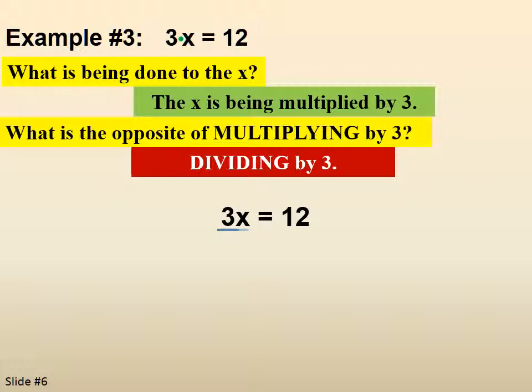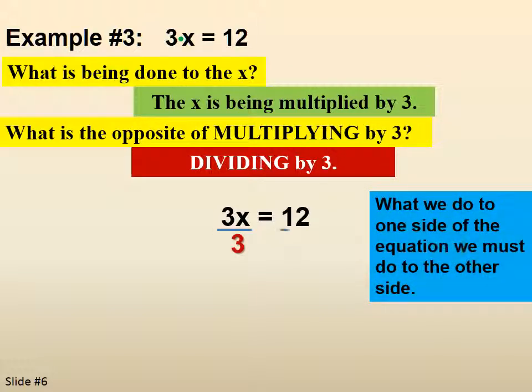So 3x equals 12. We divide both sides, again, both sides, by 3. The 3s cancel on the left, which is why we did it. And we end up with x equals 4.